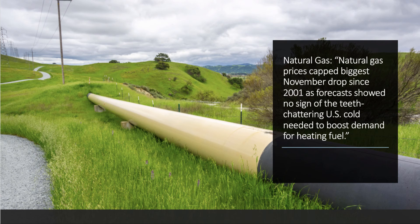Here are a couple of examples of excess supply. Natural gas prices have been falling recently, particularly in the United States. Natural gas prices saw the biggest November drop since 2001 as forecasts showed no sign of teeth-chattering cold. Natural gas prices tend to rise during the winter months, especially during a very cold spell, but unseasonably warm temperatures lowered demand for natural gas, leading to an excess of supply over demand.